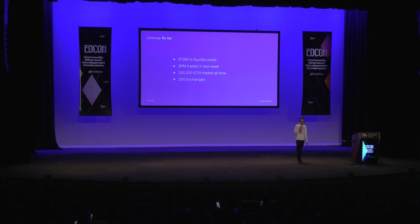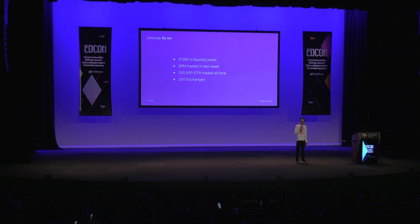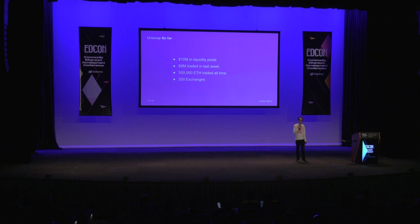I launched Uniswap in November at DevCon 4 in November 2018. I was kind of expecting it to get a little bit slower growth than it did. As of now, it has about $10 million in the liquidity pools. $9 million were traded last week — about $1.2 million per day. 300,000 ETH has been traded since November, and there are about 250 different tokens listed.